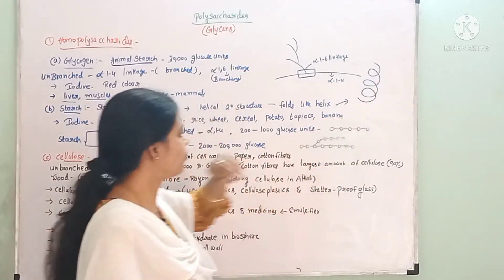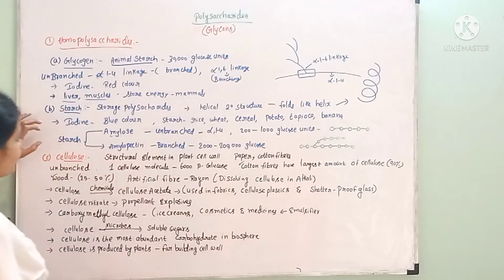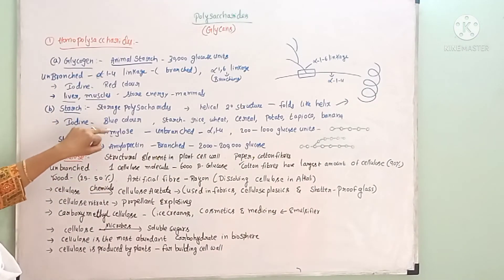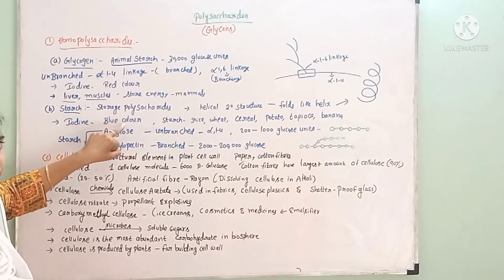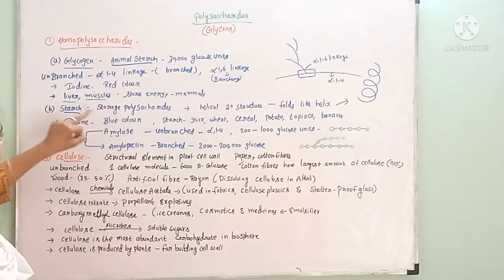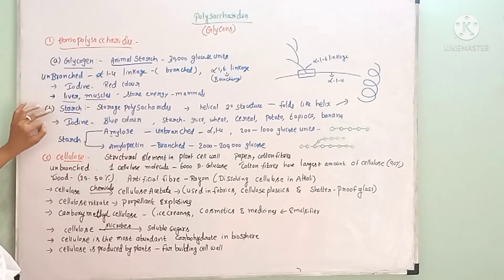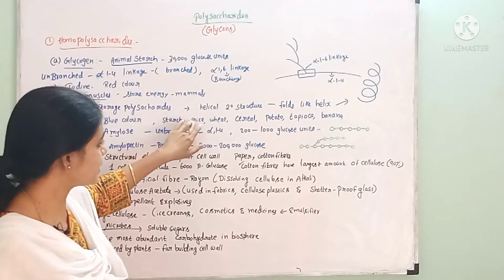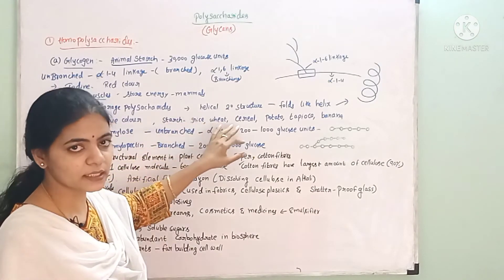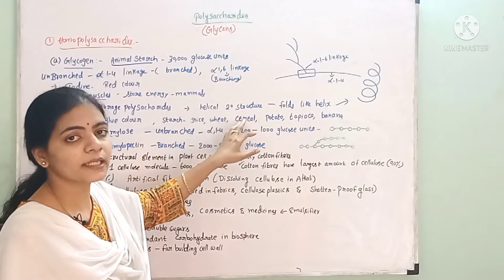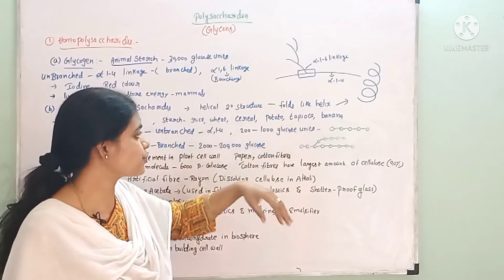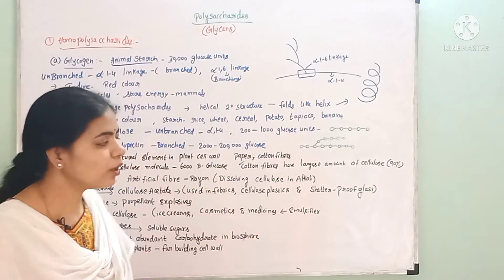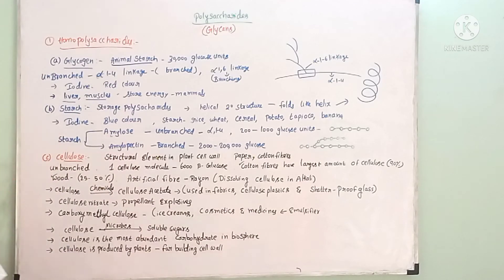The starch folds like a helix and gives a characteristic blue color with iodine. Starch is found in rice, wheat, cereals, tapioca, potato, apple, banana, and flour.